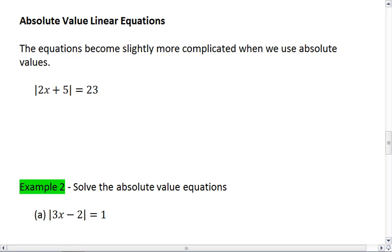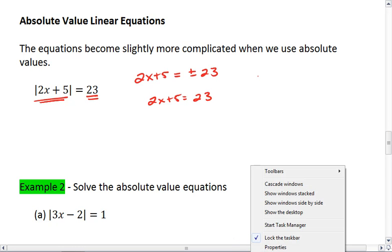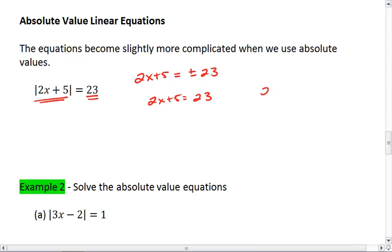This is just slightly more complicated, because when we see an absolute value, it means that whatever is on the inside can either be the positive or negative of the value it equals. Thus, 2x plus 5 can be either positive or negative 23. So we split this into two equations that we'll solve. We'll solve for when 2x plus 5 equals positive 23, and for when 2x plus 5 equals negative 23.